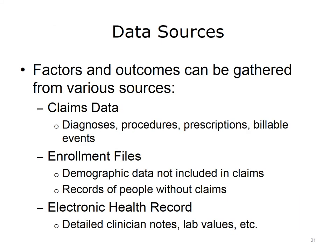Factors and outcomes for estimating or predicting models can be gathered from many sources. Claims data are the records between providers and payers of services performed, and typically include diagnosis and basic demographic information such as age and sex. Enrollment data can provide additional demographic information not included in the claim record, including factors for individuals who have not had claims submitted on their behalf. Finally, many organizations have electronic health records which can include detailed clinician notes, lab values, and other measurements not included in claims or enrollment data.